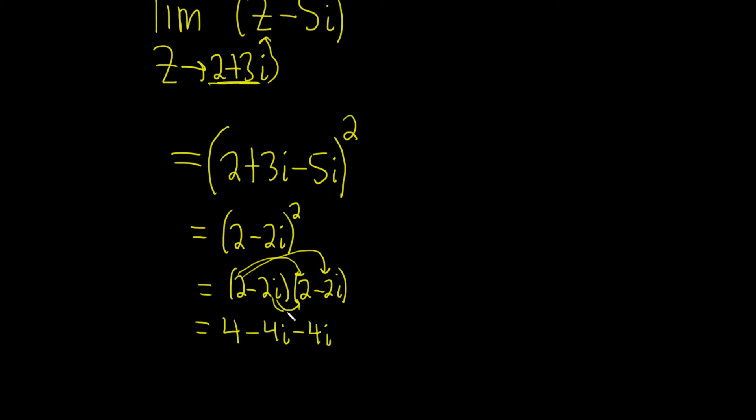And then negative 2i times negative 2i is plus 4i squared, because negative and negative is plus, and then we square the i.